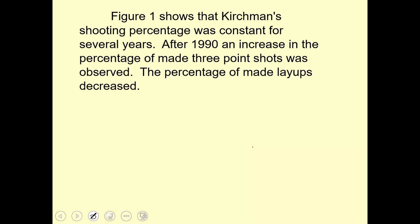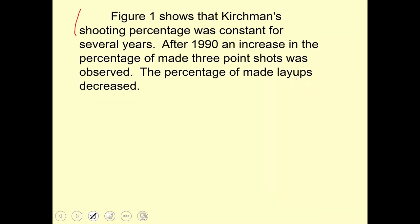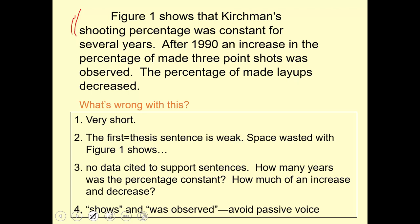The other thing that's wrong with it is the first sentence. If we go back to the data, there are two different things happening: first, two different types of shots, and also a big difference in the way those percentages changed over time. They were kind of constant for a while, and then layups went down and three-point shot percentages went up. So the first sentence says something about the shooting percentage being constant — well, that's only about half the graph. So it's not a great thesis sentence; I would say it's not a thesis sentence at all.